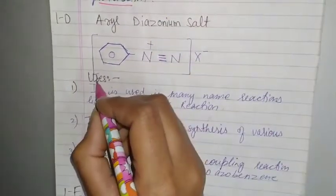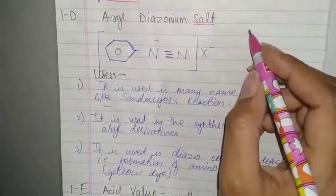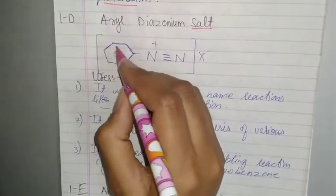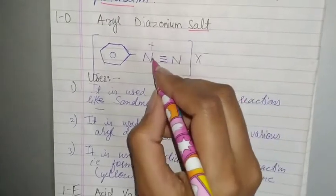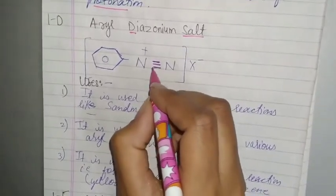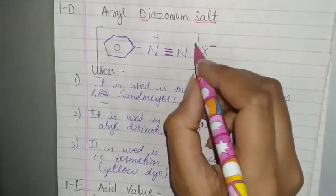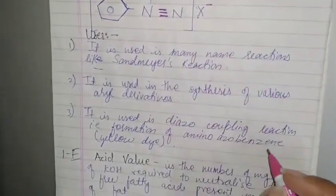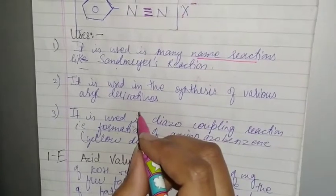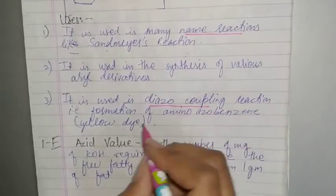Aryl diazonium salt and its uses. We have aryl aromatic ring, then diazonium means nitrogen and di means two, two nitrogen compound. Nitrogen valency has three bonds here, we have positive charge, and halogen X. This is the aryl diazonium salt. It is used in many name reactions such as Sandmeyer's reaction, in the synthesis of various aryl derivatives, in diazo coupling reaction, and formation of azo benzene which is yellow dye.